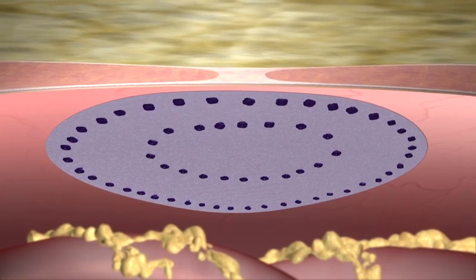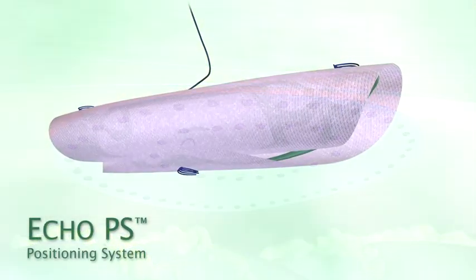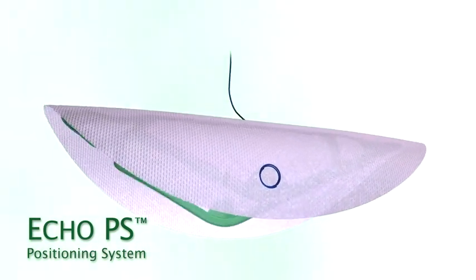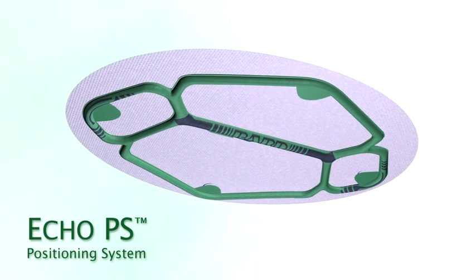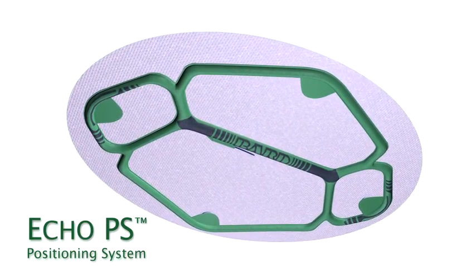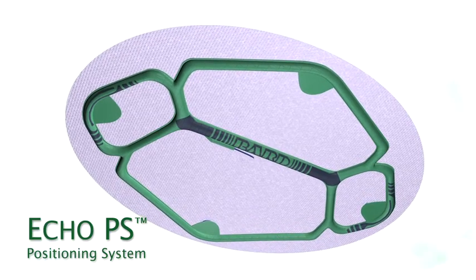The ECHO-PS Positioning System with Ventralite ST Mesh facilitates optimal mesh deployment by eliminating some of the challenges of placing and positioning mesh. The ECHO-PS Positioning System is designed for today's laparoscopic surgeon to facilitate an efficient and reproducible repair.